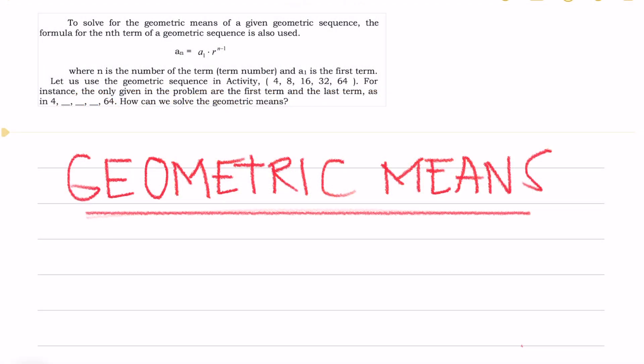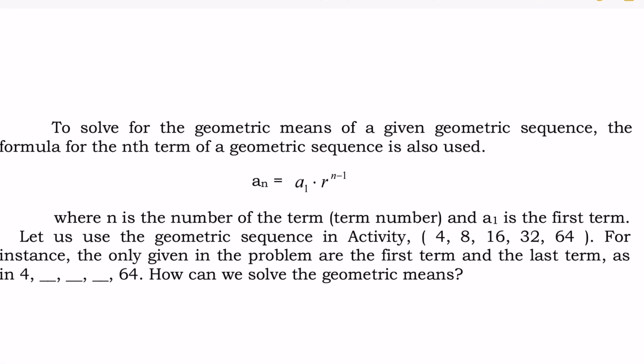How to Solve Geometric Means. To solve for the geometric means of a given geometric sequence, the formula for the nth term of a geometric sequence is also used: a sub n equals a sub 1 times r raised to n minus 1, where n is the number of the term (term number) and a sub 1 is the first term.